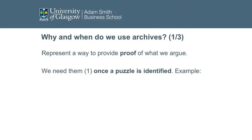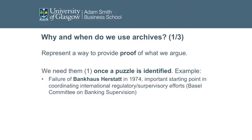The first one — probably the easiest — is once you identify a research puzzle. You have a question and then you say, well, I would like to know more about this, so I will go to the archive to see what's going on. One example linked to my research is Bankhaus Herstadt.